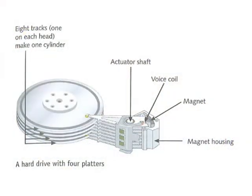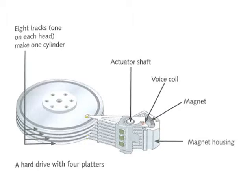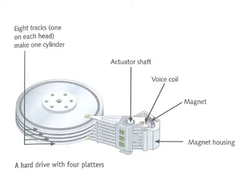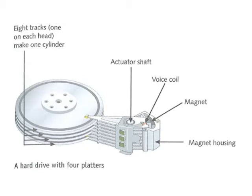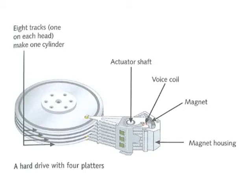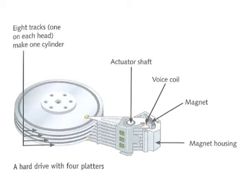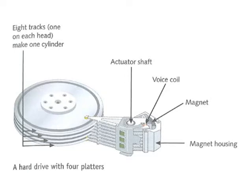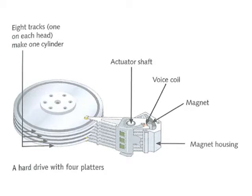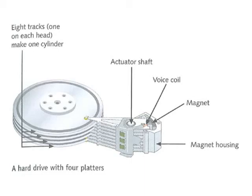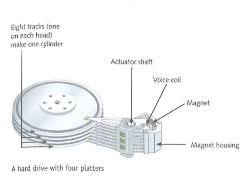Each surface of each platter is called a head. There are two heads to a platter. Each head is divided into tracks and sectors. Take a look at the example hard drive on screen, which has eight heads or eight platter faces. When you take tracks from each face of a platter, which are all the same distance from the center, you get what's called a cylinder. The hard drive will always write data starting from the outside edge of a platter moving inward as it fills up free space. A cylinder will always be filled with data before the hard drive will write to a new cylinder.